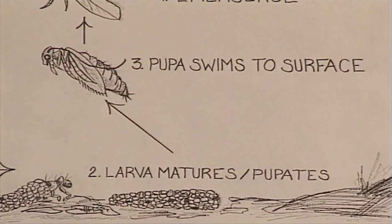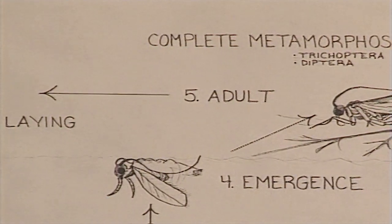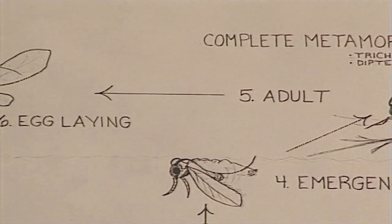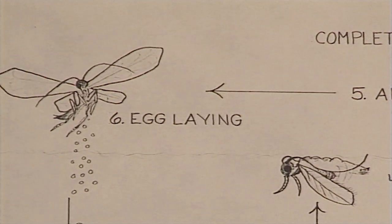Then, when Mother Nature tells them it's time, that pupa swims to the surface, attaches itself to the surface film, and breaks out of that to become the adult. We often hear that referred to as the emergence. That adult will then fly off into the trees and later return to mate and lay its eggs.